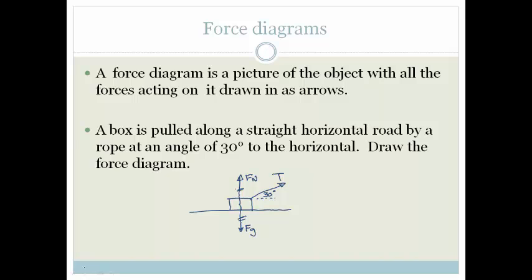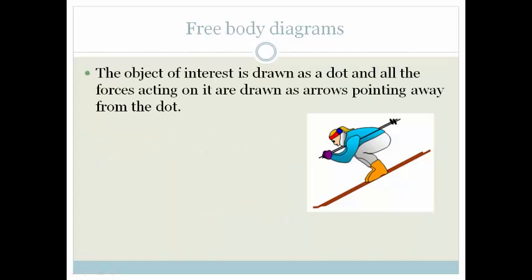Let's look at a free body diagram. Instead of having the box or a person drawn in, we now use a dot, and all the forces acting on it are drawn as arrows pointing away from the dot. Instead of her, we're going to draw a dot—a colored-in circle.